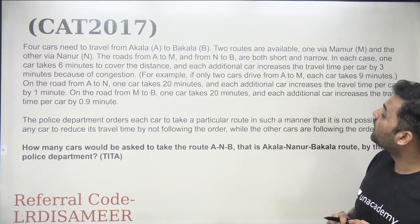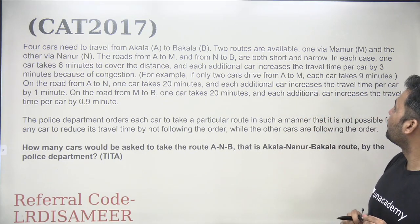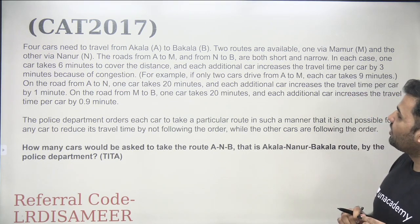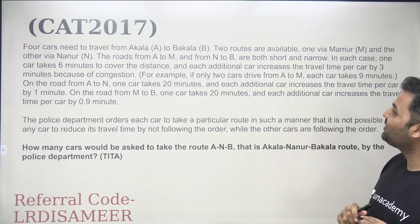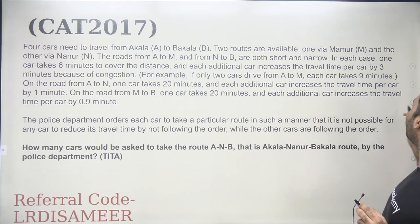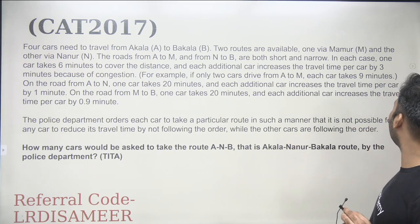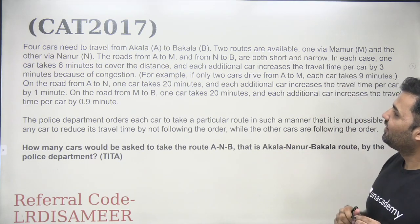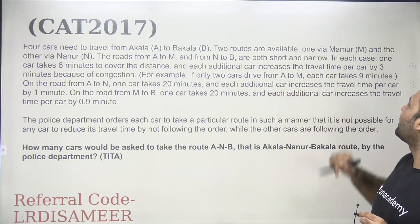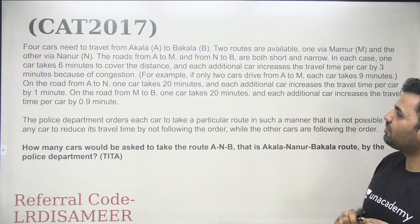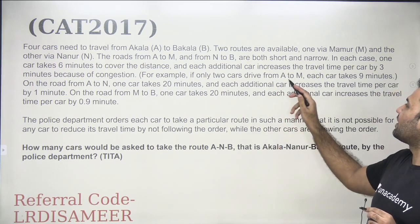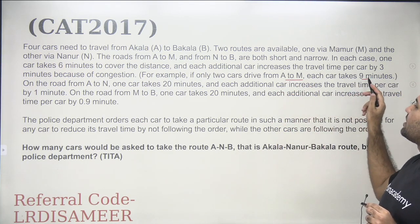Two routes are available: one via Mamur and the other via Nanur. The roads from A to M and from N to B are both short and narrow. In each case, one car takes six minutes to cover the distance, and each additional car increases the travel time per car by three minutes because of congestion. For example, if only two cars are traveling from A to M, each car takes nine minutes.